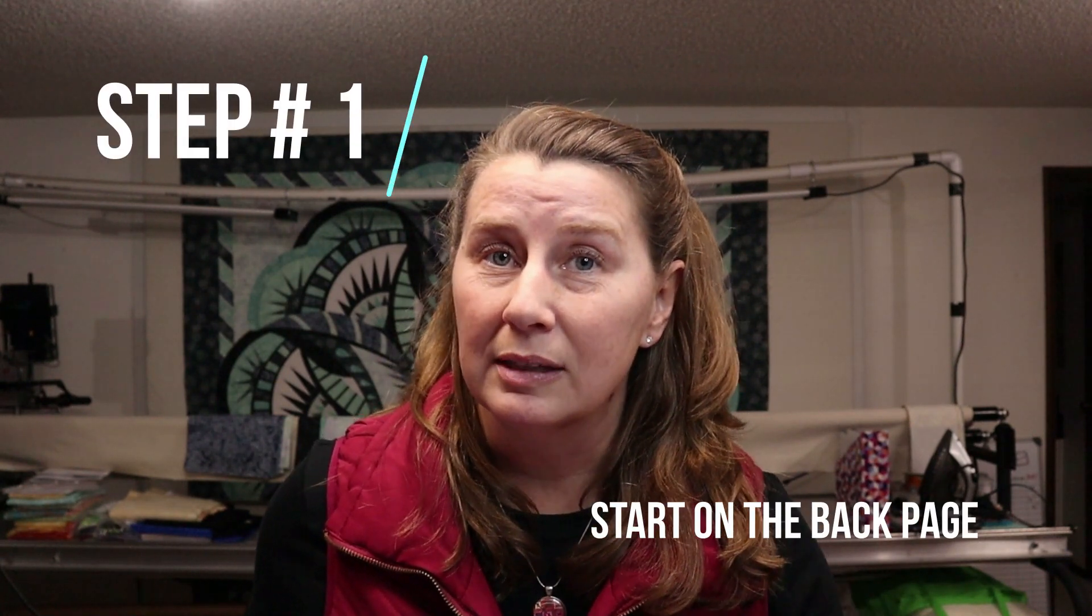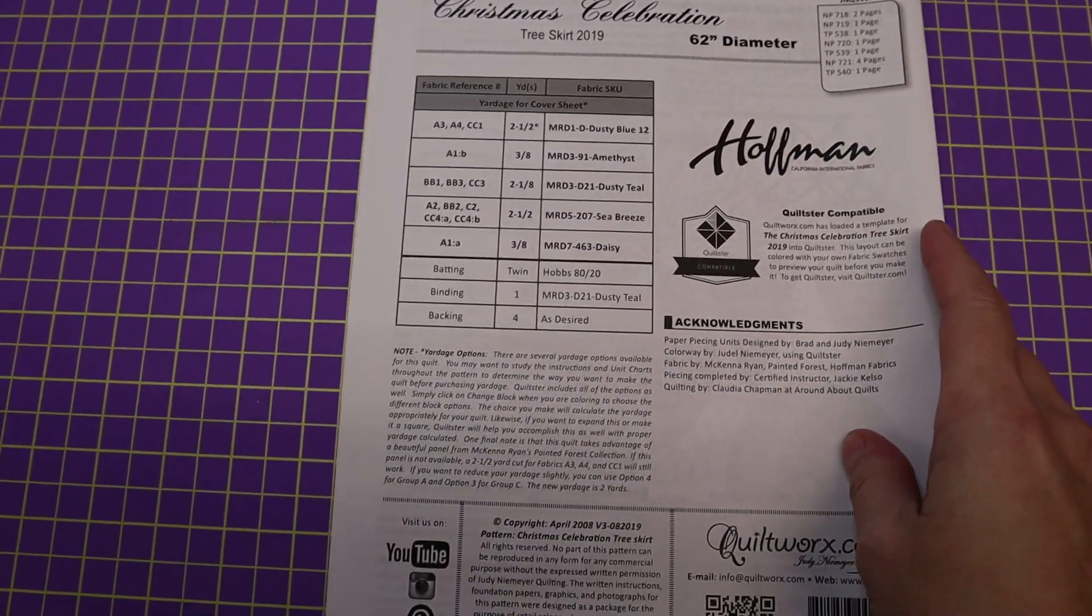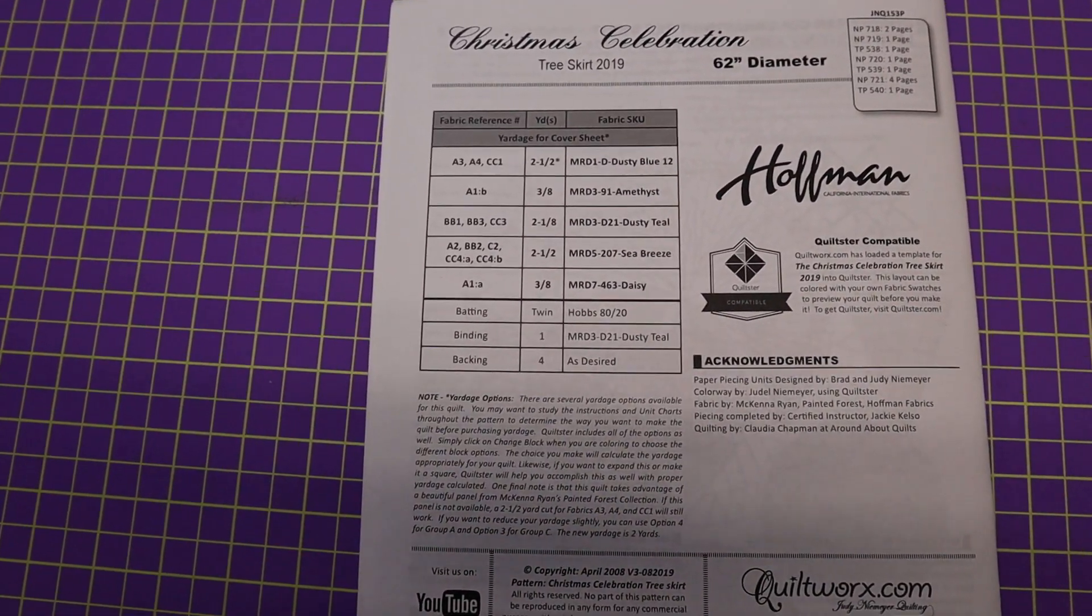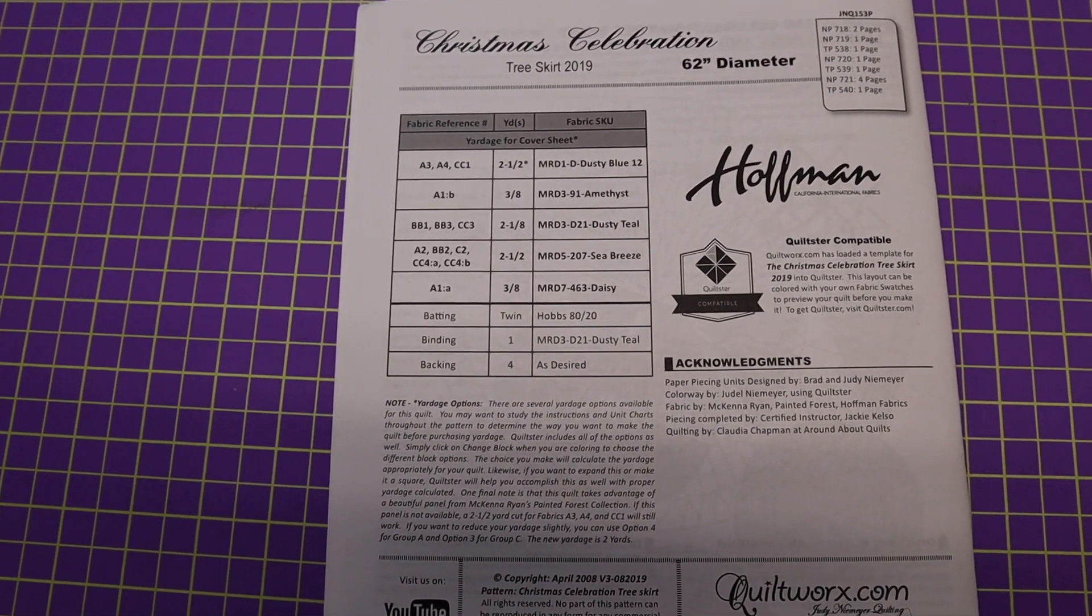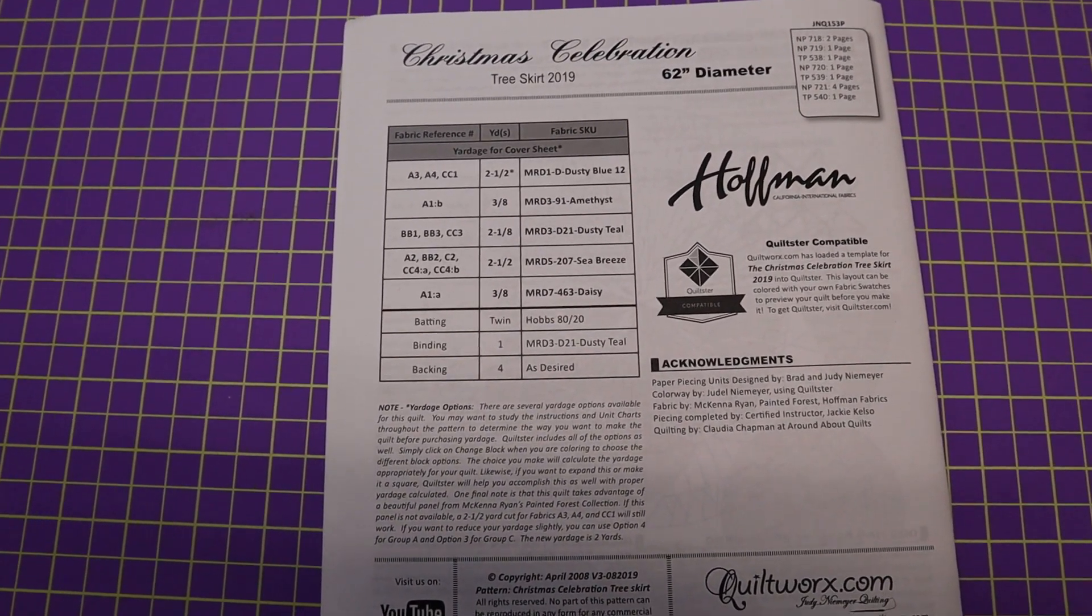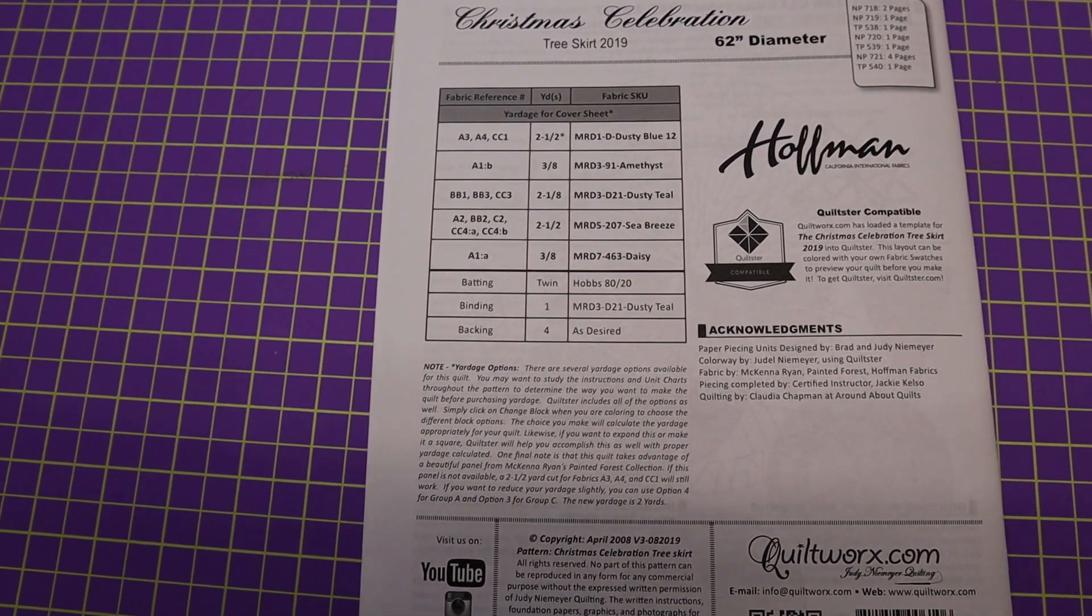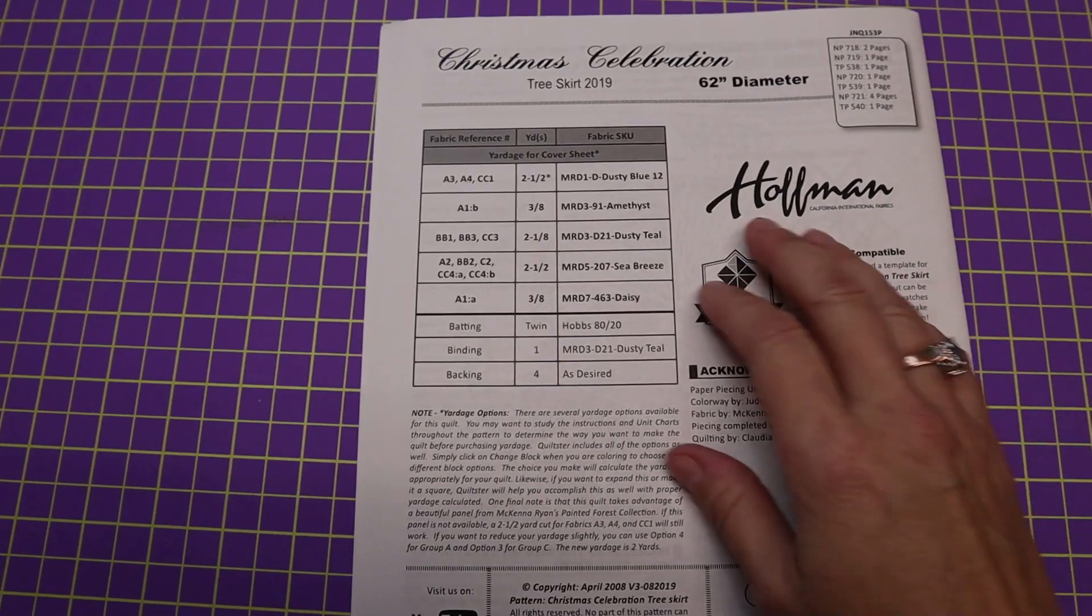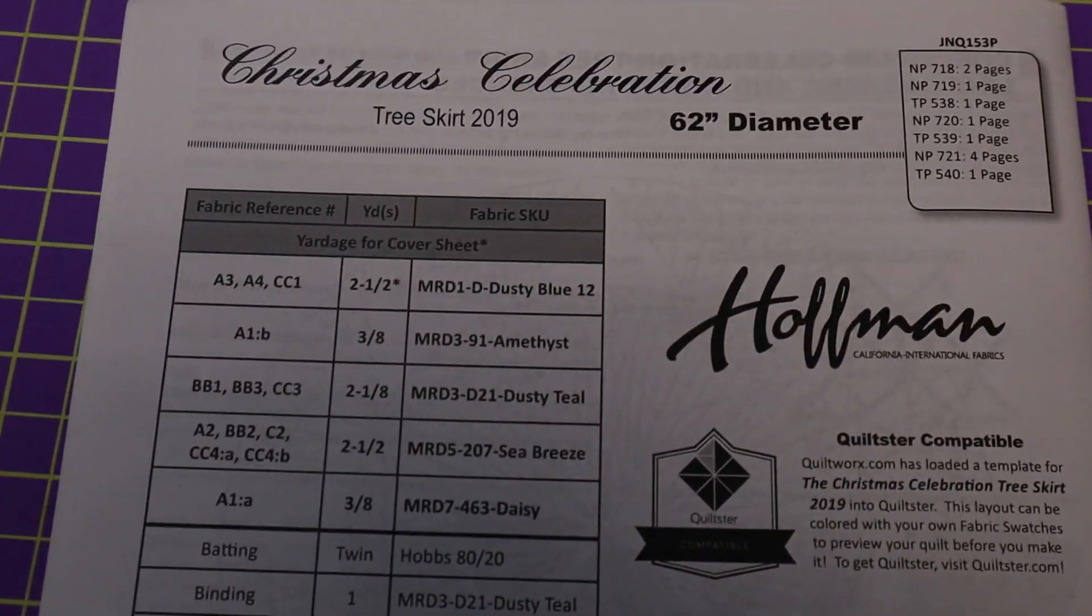My first tip is always start with the back page. And let me take you down to the pattern and show you what I mean. Okay, so this is the back page of, this happens to be Christmas Celebration. This video is not specifically for that quilt. The general instructions that I'm going to give are basically for just about any Quiltworks pattern. There are a few differences here and there and I'll try to point those out. But for the most part, if you follow these general guidelines or general tips with any of Judy's patterns, it should make you successful. So one of the first things I look at is the size. And this one is a circle, so it shows right here 62 inch diameter.